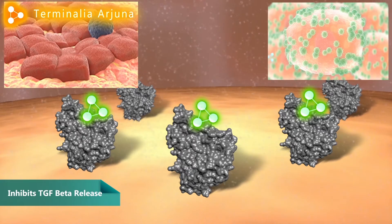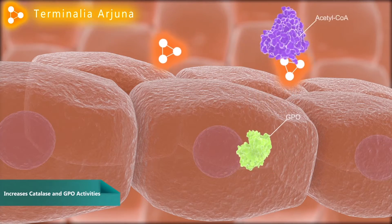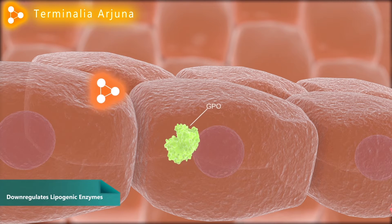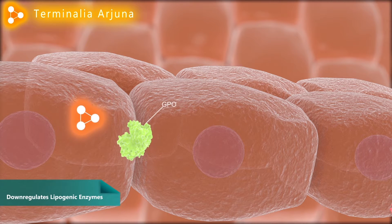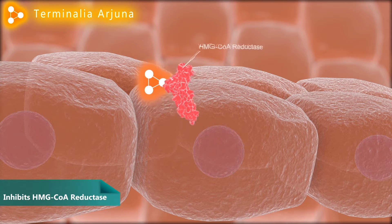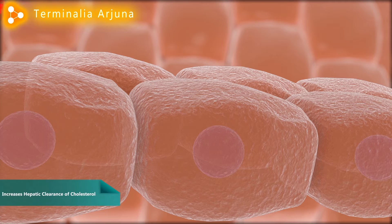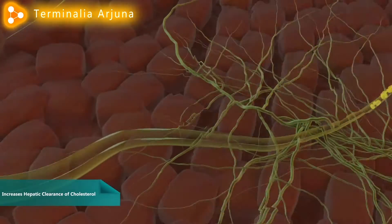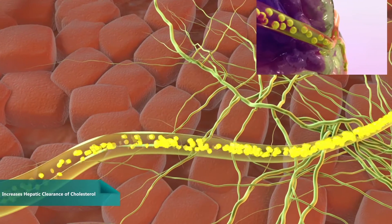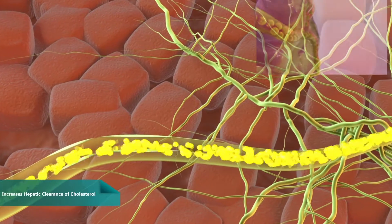Terminalia arjuna increases the activity of catalase and glutathione peroxidase to protect the hepatocytes from oxidative damage. It down-regulates the lipogenic enzymes to prevent triglycerides synthesis. Terminalia arjuna in LIV-52 also inhibits HMG-coenzyme A reductase and increases the hepatic clearance of cholesterol by increasing bile synthesis.